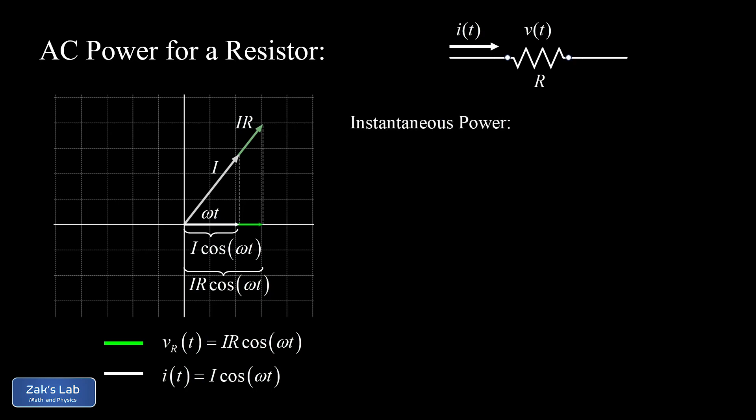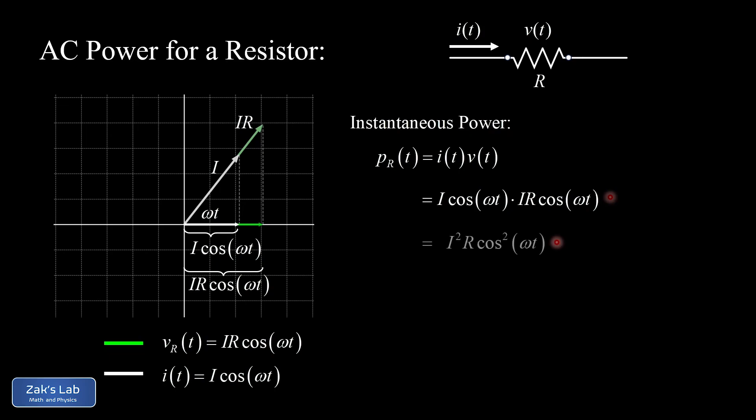Now we compute the instantaneous power dissipated by the resistor. Power is current times voltage, so p(t) = i(t)·v(t). Substituting in our formulas, we get I·cos(ωt) times IR·cos(ωt), which simplifies to I²R·cos²(ωt). So the instantaneous power has a cos²(ωt) dependence.